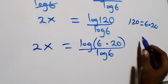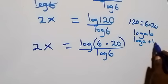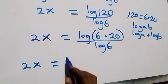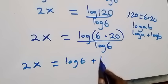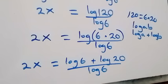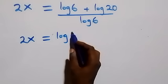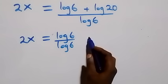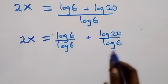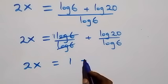The next step follows from the law of logarithms where log of a times b can be written as log a plus log b. So what we have becomes 2x equals log 6 plus log 20, all over log 6. We separate this into two fractions: log 6 over log 6 plus log 20 over log 6. The log 6 terms cancel to give 1, so we have 2x equals 1 plus log 20 over log 6.